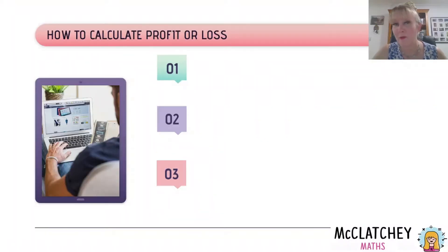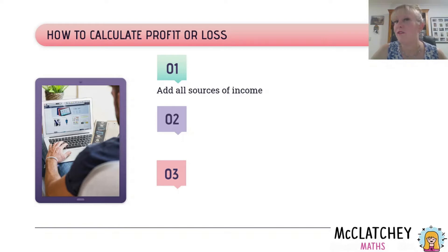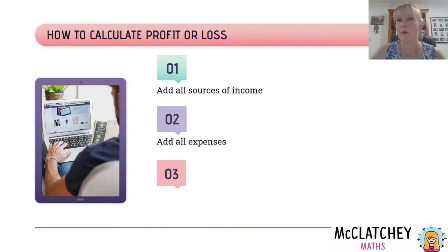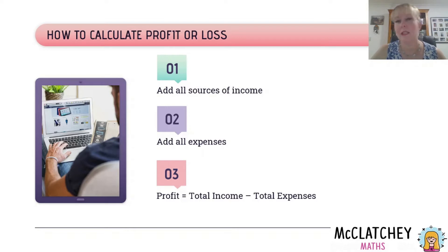Let's talk about how to calculate profit or loss — it's very simple, three easy steps. Firstly, add all your sources of income: in a business most income comes from selling goods and services, but sometimes there may also be income from selling investments or assets. Step two: add all of the expenses of the business. Lastly, profit equals total income minus total expenses. Add them up, take it away.